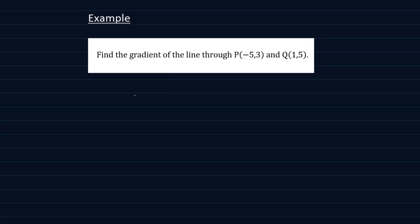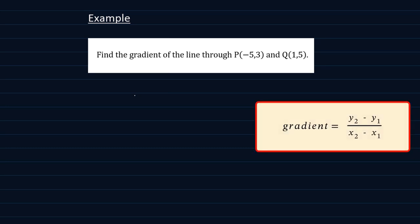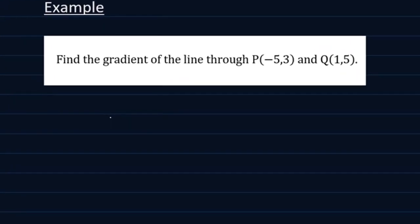Now we've been given two points and we have said gradient of a line given two points is found by y2 minus y1 divided by x2 minus x1. Now for the two points we can say let this point be x1, y1 and this one be x2, y2.